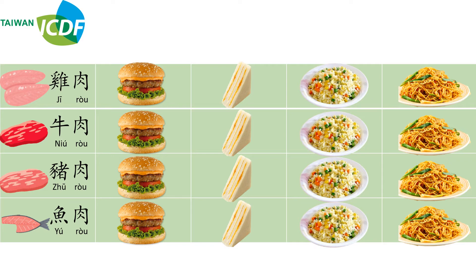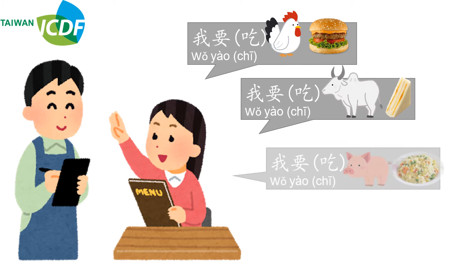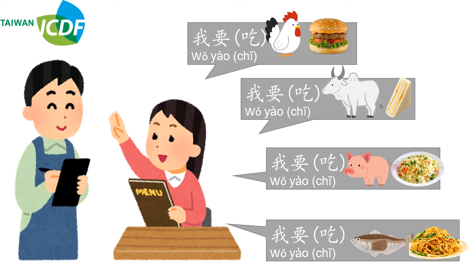鸡肉汉堡, 鸡肉三明治, 鸡肉炒饭, 鸡肉炒面. I will leave the rest for you to practice with 牛肉, 猪肉, and 鱼肉. Now let's use full sentences: 我要吃鸡肉汉堡, 我要吃牛肉三明治, 我要吃猪肉炒饭, 我要吃鱼肉炒面.